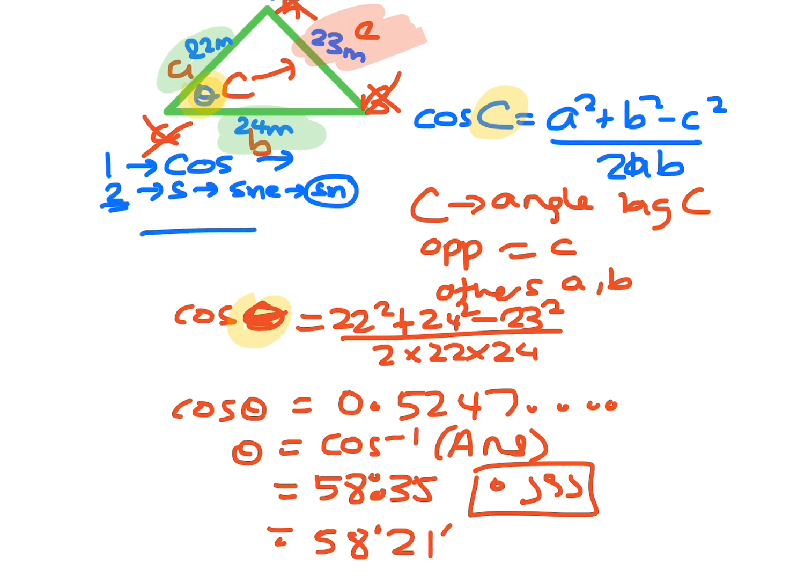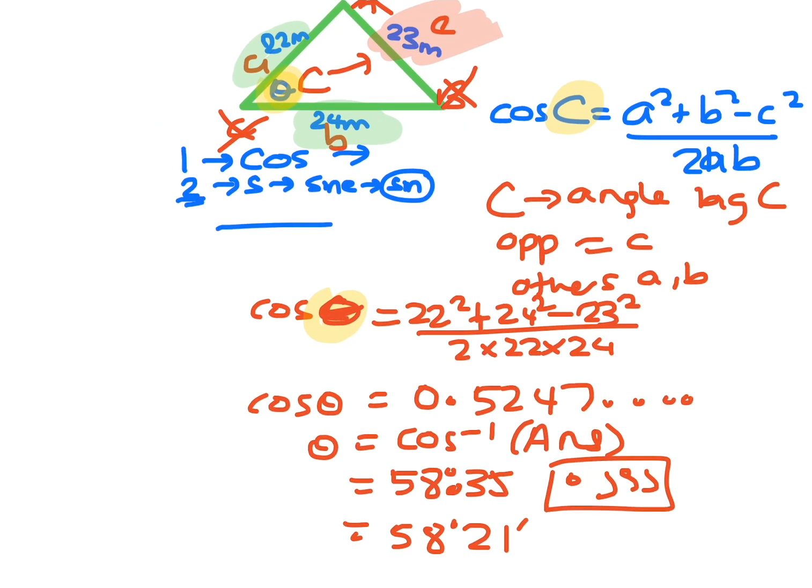Now you don't have to do the acute or obtuse thing because the same thing does not work for cosine. It's only sine that has the ambiguous case. If you put in cos 60, you get a half, but if you put in cos 120, like the obtuse angle, you'd actually get minus a half.